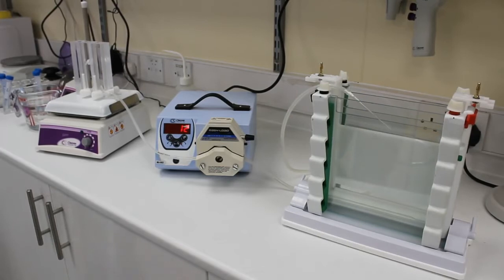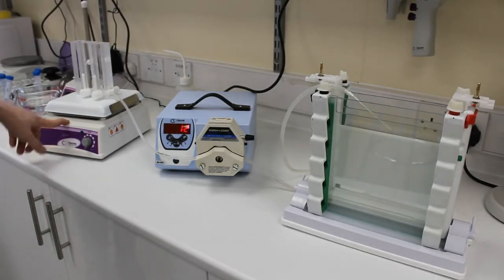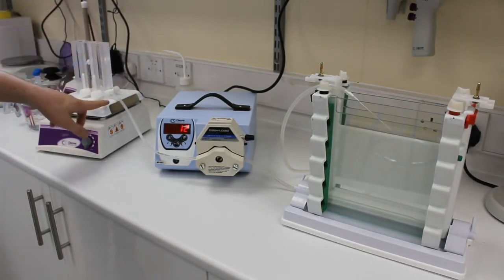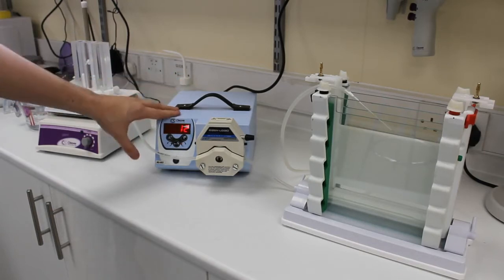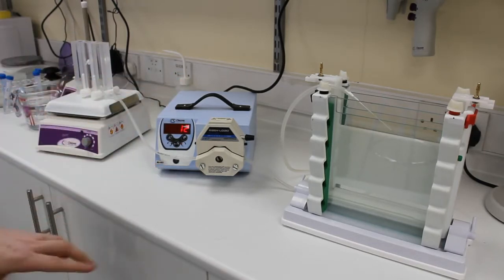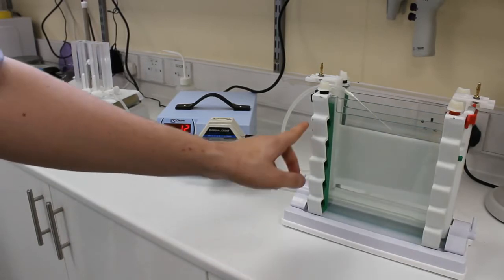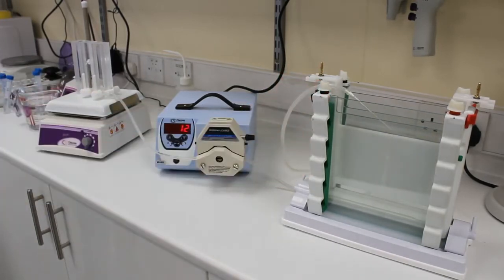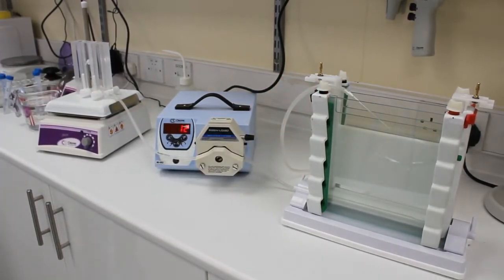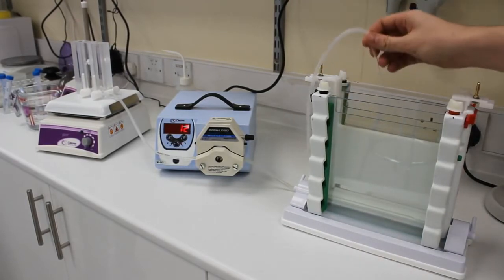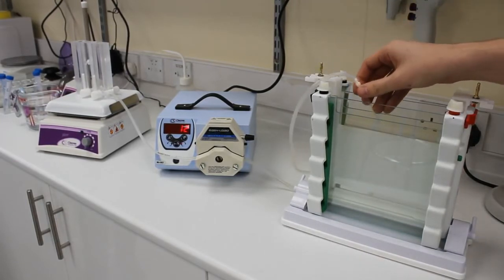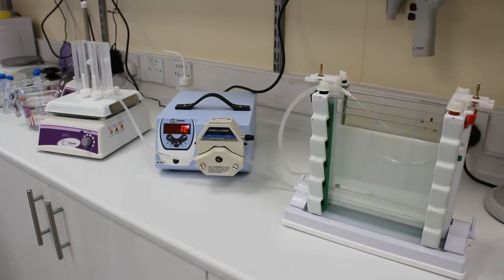So we've got our magnetic stirrer, on top of that we've got a gradient mixer that's connected to a peristaltic pump, this is the model MUD02, and then that's feeding into the casting base with the glass plates. We've got that connected to a gel loading tip which is going to be controlling the flow of gel into the glass plates.